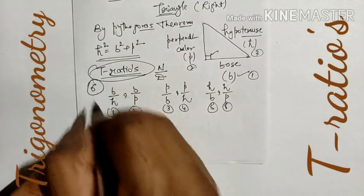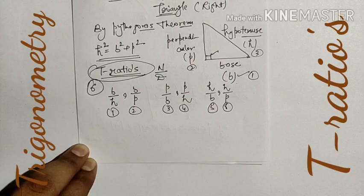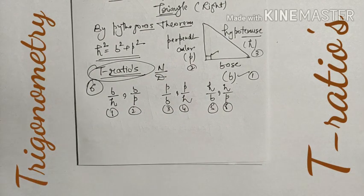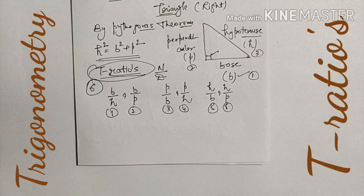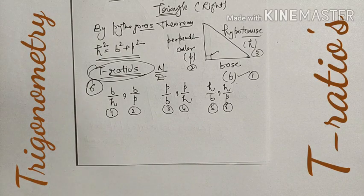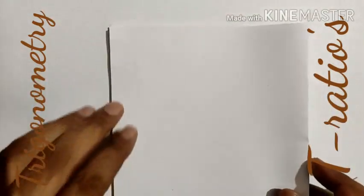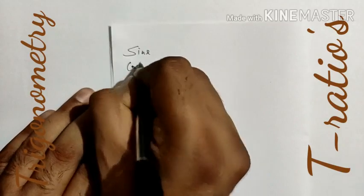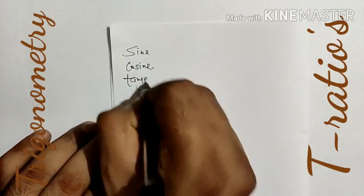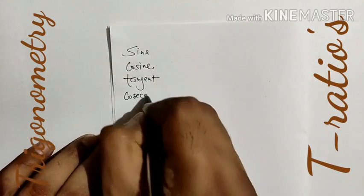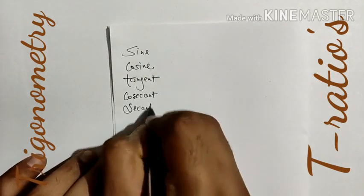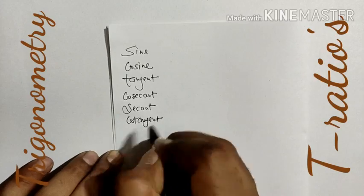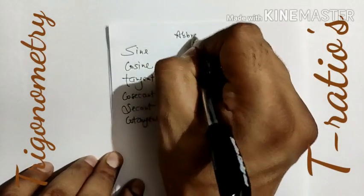Counting all these combinations, the total number of T-ratios is 6 — not less than 6, not more than 6. These six T-ratios are calculated with the help of the sides of a right angle triangle. The names of the six T-ratios are: sine, cosine, tangent, cosecant, secant, and cotangent.